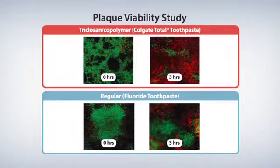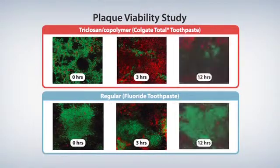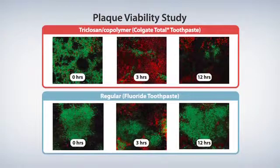However, after brushing with a regular fluoride toothpaste, plaque can become viable again within 3 hours, as shown in the picture on the bottom right. But, as shown in red in the upper right, Colgate Total toothpaste clearly demonstrates the ability to reduce plaque viability for 12 full hours after brushing.